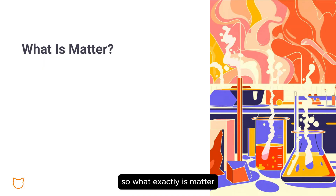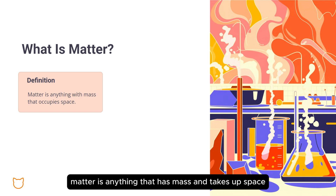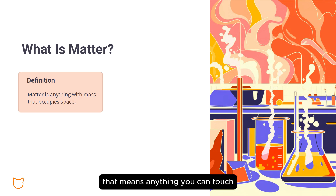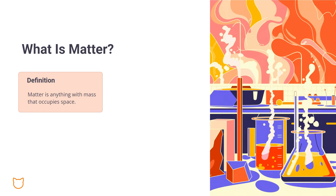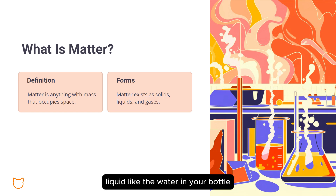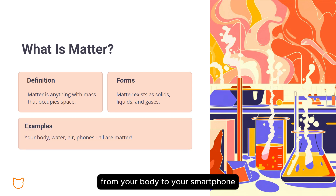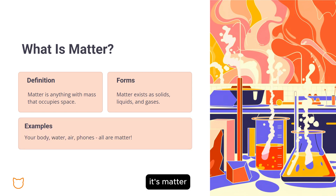What exactly is matter? Matter is anything that has mass and takes up space. That means anything you can touch, see, or even smell is made of matter. And it comes in three forms: solid, like your textbook; liquid, like the water in your bottle; and gas, like the oxygen you're breathing. From your body to your smartphone, if it's real and takes up space, it's matter.